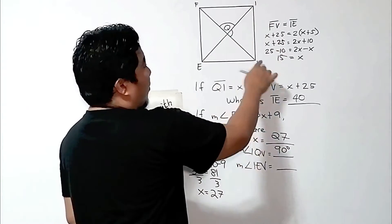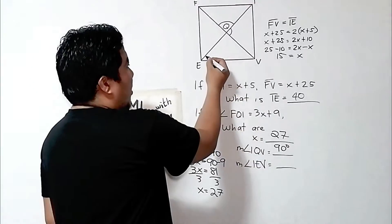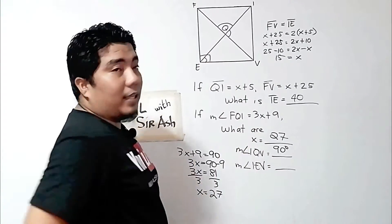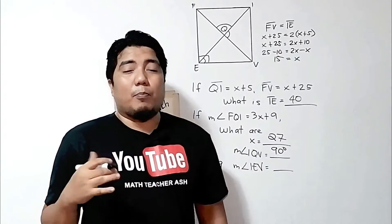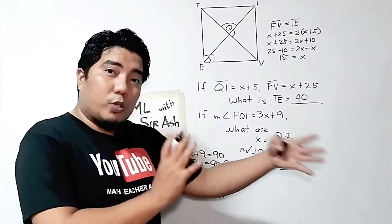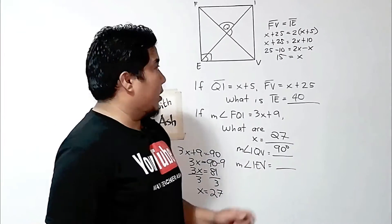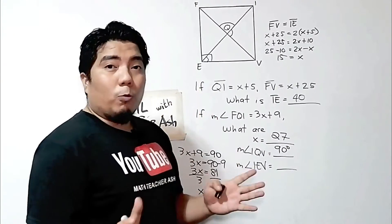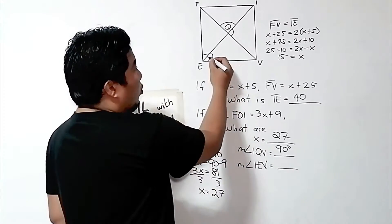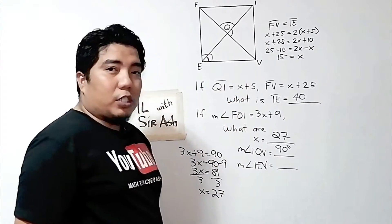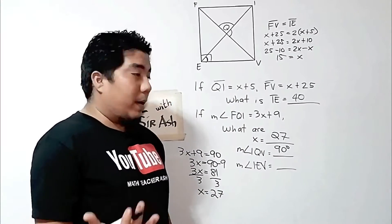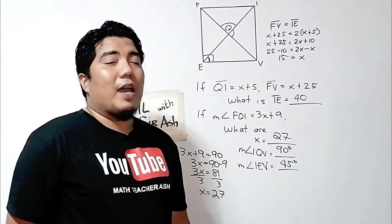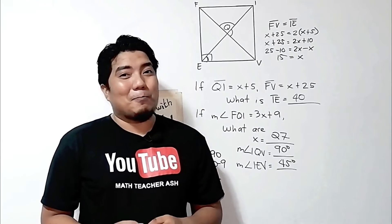How about IEV? Remember that this angle is 90 degrees, and one of the properties of the rhombus — which is also acquired by squares — is that each diagonal divides the opposite angles into 2. Therefore, if we need to find this angle, we just divide 90 by 2, and that is 45 degrees. So we have answered all of the problems in this given figure.